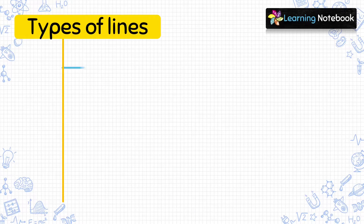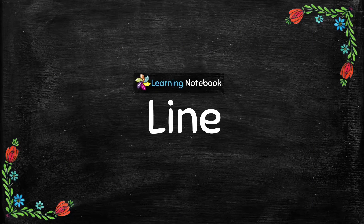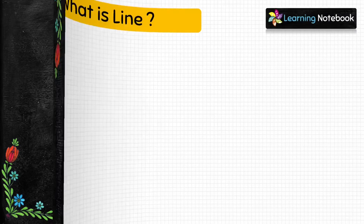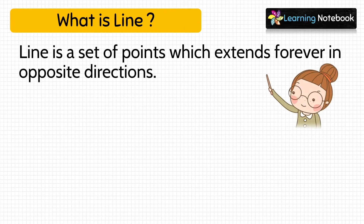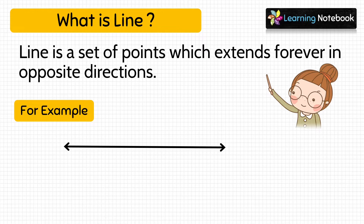There are three types of lines: line, line segment, and ray. Let's understand them one by one. First, we are going to learn about line. A line is a set of points which extends forever in opposite directions. For example, this is a line — the arrows on both sides represent that a line goes indefinitely in both directions. So a line has no fixed length.